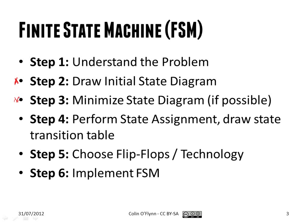Steps four, five, and six are where we actually implement it. In step four, we go from the arbitrary states we defined to states we can represent in binary, and we draw a table showing how we change between those binary states. Steps five and six are where we implement it with the chosen technology. What we're learning today is that steps one, two, and three stay the same, but for steps four, five, and six, we're going to use some computer tools to make this all a lot easier.